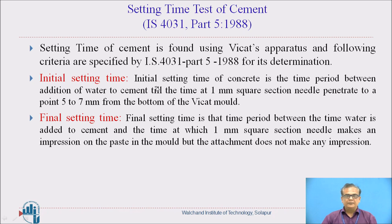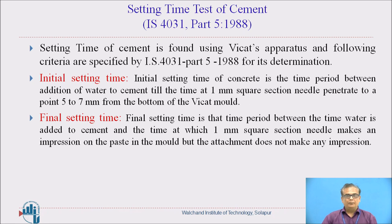What is initial setting time? Initial setting time is the time period between the addition of water to cement until the time at which a 1 mm square section needle penetrates to a point 5 to 7 mm from the bottom of the Vicat mold. This particular initial setting time needle devised by Vicat has a 1 mm square section, and this needle should penetrate in the mold of cement paste to a depth of 5 to 7 mm from the bottom of the mold.